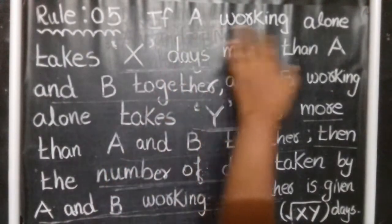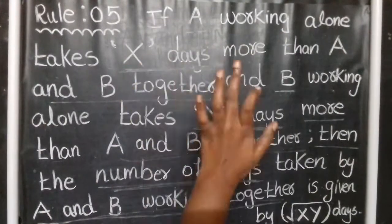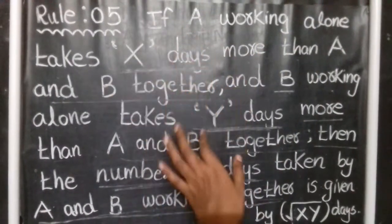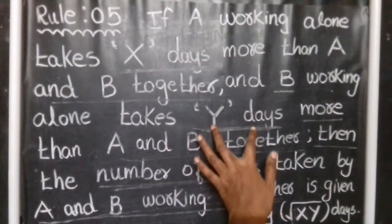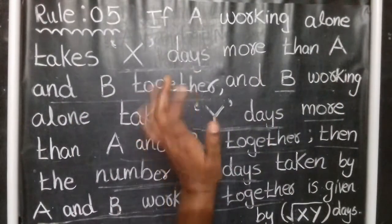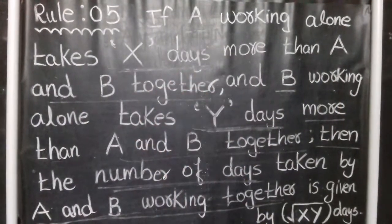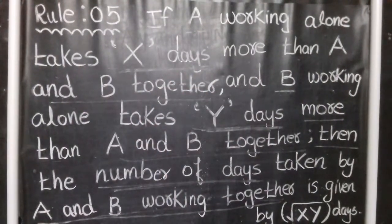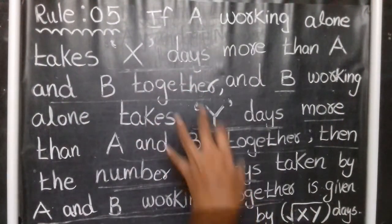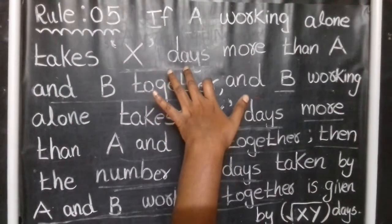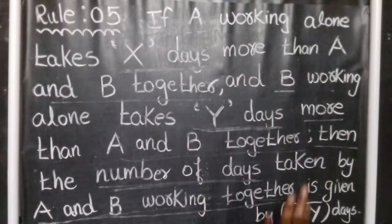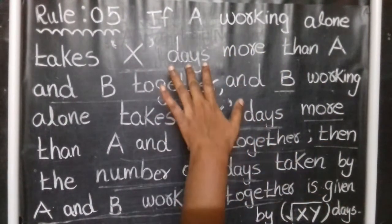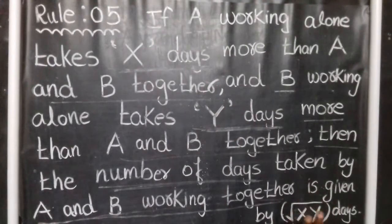Because if A working alone takes some days, and B working alone takes some days, but A and B together takes fewer days — that is the number of days we need to find. Sometimes the unit can be days or hours, so we apply this formula accordingly.